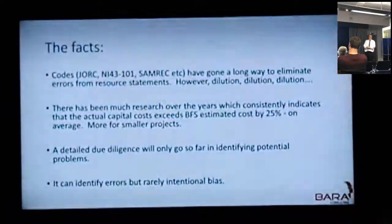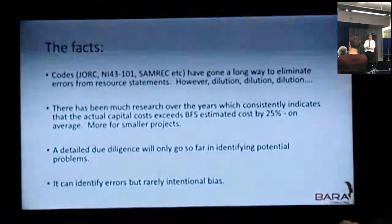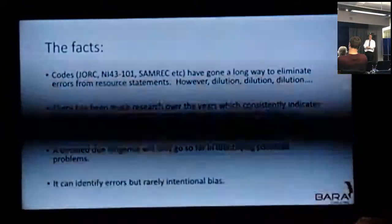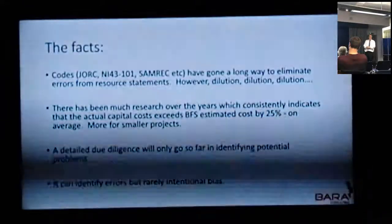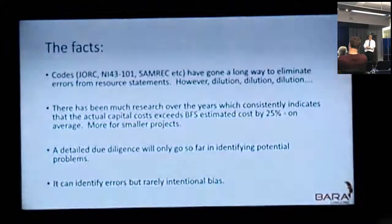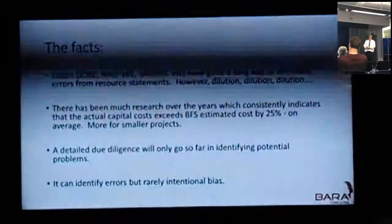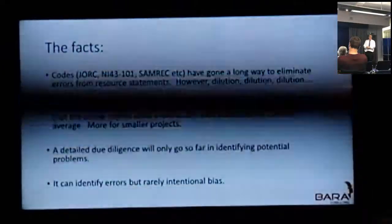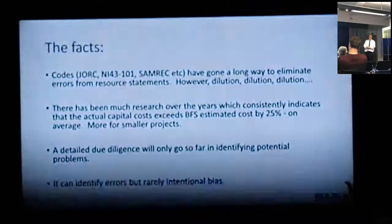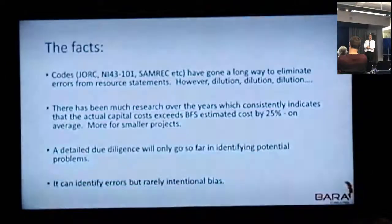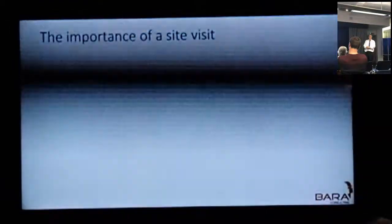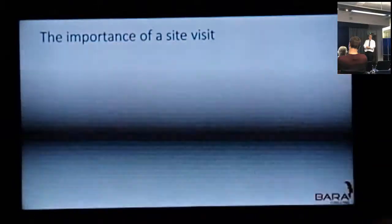Some facts. The codes have gone a long way to eliminate errors from resource statements. However, dilution is a big problem in reserve estimates, and I'll put a slide on that a little bit later. There's been much research which consistently indicates that actual capital cost exceeds BFS estimates by around 25% on average — at least larger than that for smaller projects. And detailed due diligence will only go so far in identifying potential problems. We're often asked, believe it or not, to do due diligence without going on a site visit.